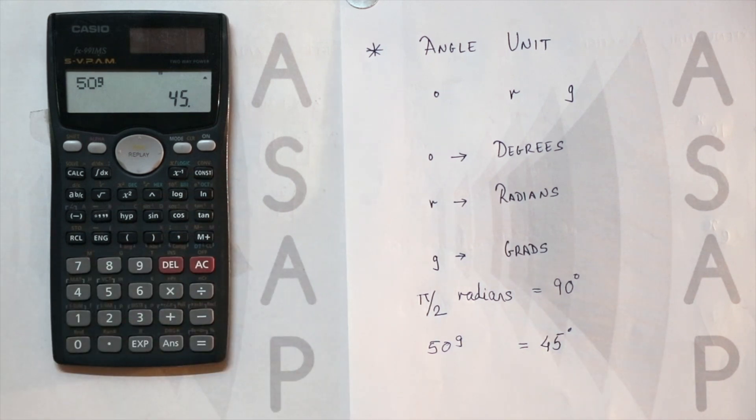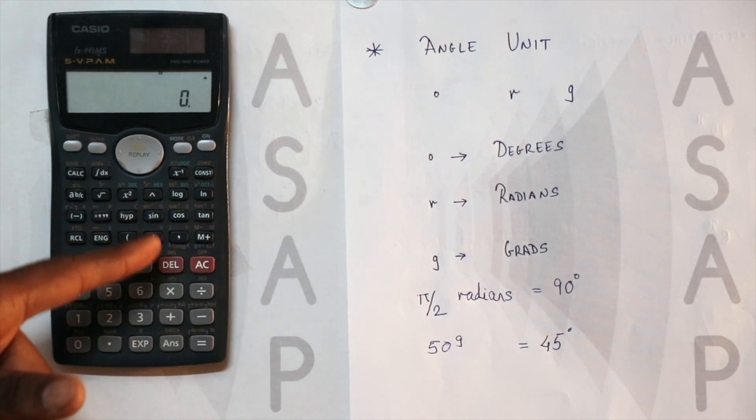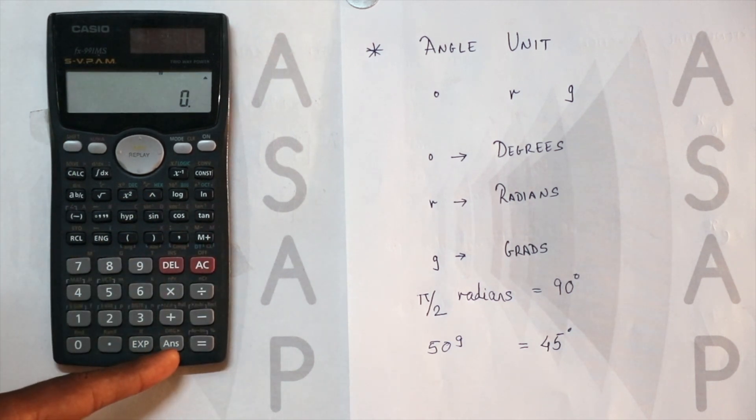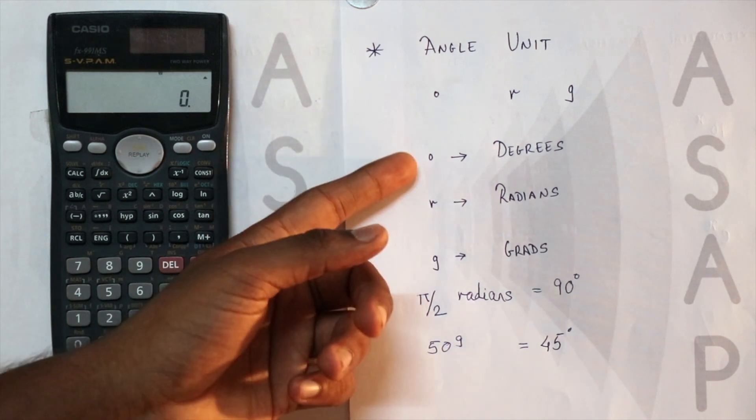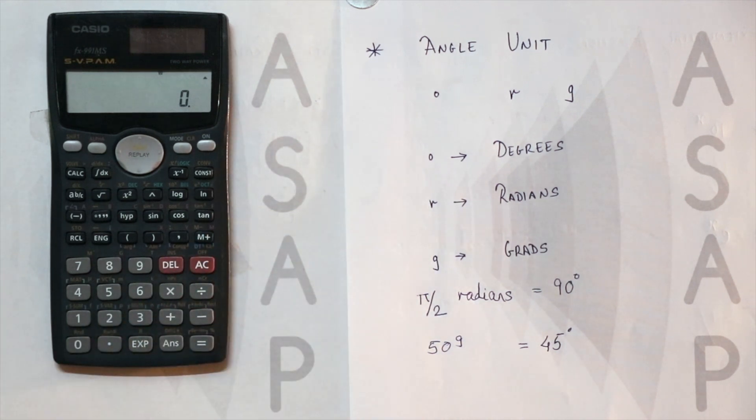So it's as simple as this. Whatever function you want to use, you just use that, and then you use shift, then the answer button, and choose which unit you want: degree, radians, or grads. Thank you.